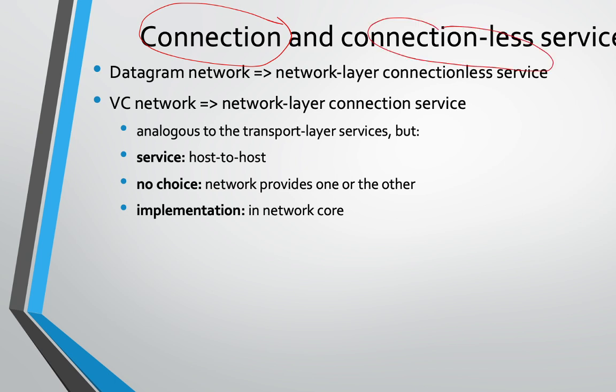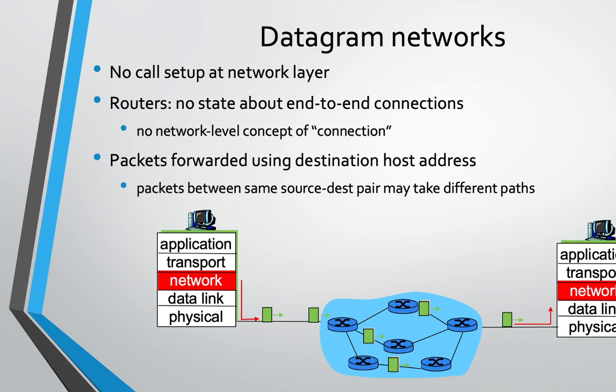The internet is not a virtual circuit network — it is a datagram network. The internet that connects the whole world is actually a datagram network. From our university network, if we are sending something to America, there are a varied number of interconnections involved. For simplicity, we usually show just a couple of routers in the diagram.